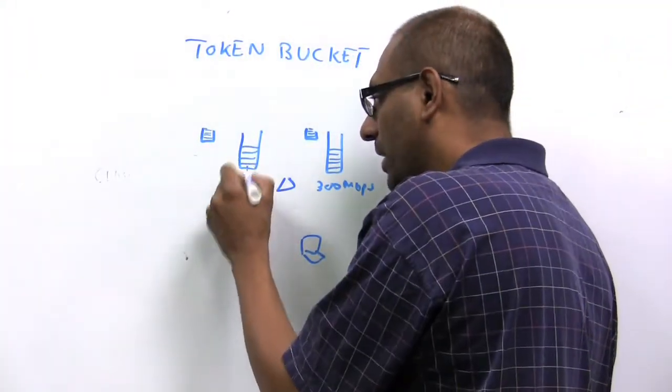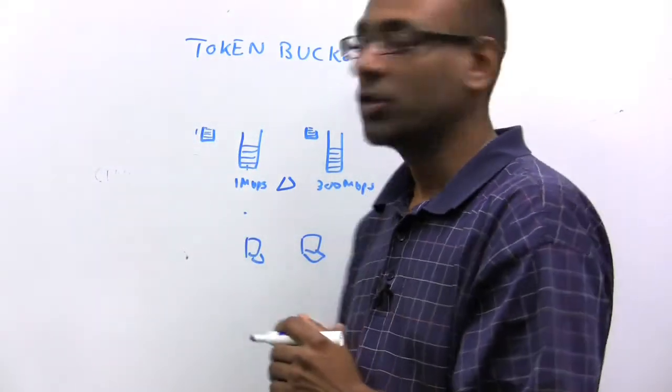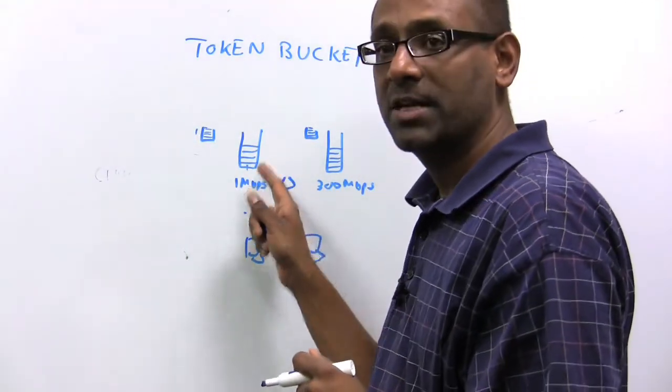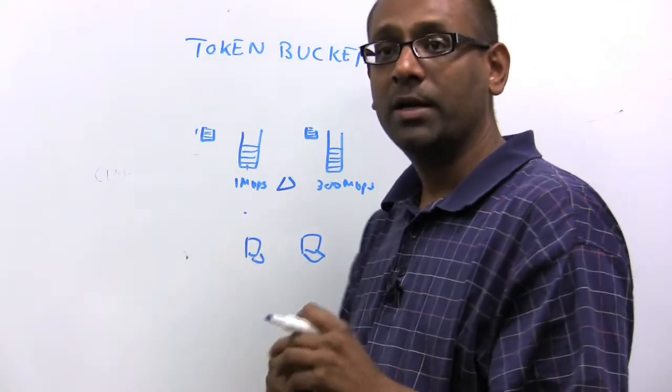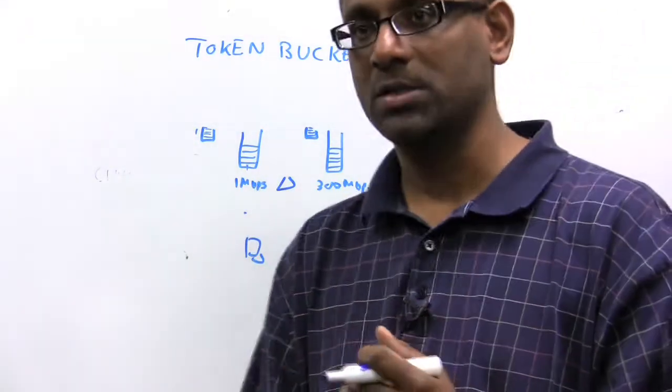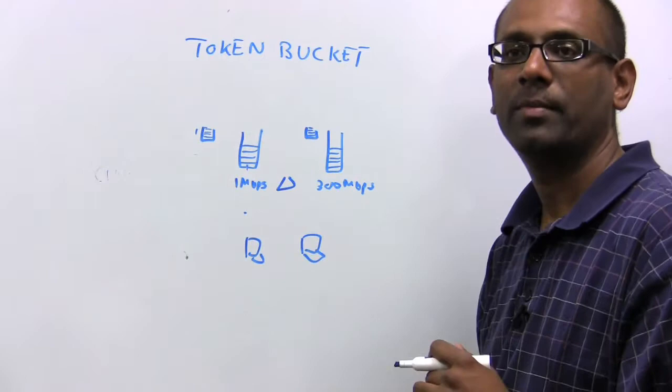Notice that any time a frame is transmitted at 1 megabit per second, it consumes 300 times as many tokens as a frame that's transmitting at 300 megabits per second.